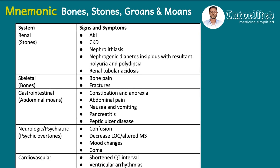Here is a table illustrating the mnemonic with corresponding signs and symptoms. For renal: AKI, CKD, nephrolithiasis (renal stones), and nephrogenic diabetes insipidus presenting as polyuria and polydipsia. For skeletal: bone pain and fractures. For gastrointestinal: constipation, anorexia, abdominal pain. For neuropsychiatric: confusion and mood changes. Make sure you know this mnemonic.